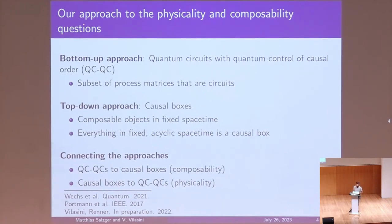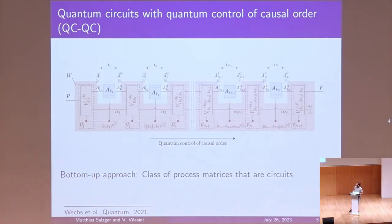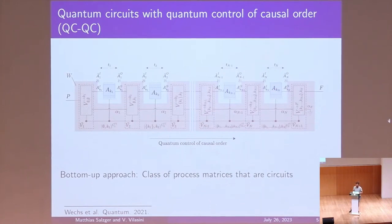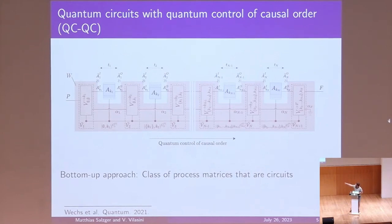This is essentially the outline of the talk: I want to give you some intuition of these two frameworks and the mappings we constructed. Looking at a picture of the QCQC framework — ignore all the complicated notation and just focus on the colors — you essentially have a circuit with a pink component, and you can slot in the blue agents into the holes. These blue things are the agents, and the indefinite causal order comes from having some quantum control which controls which agent acts at which point.